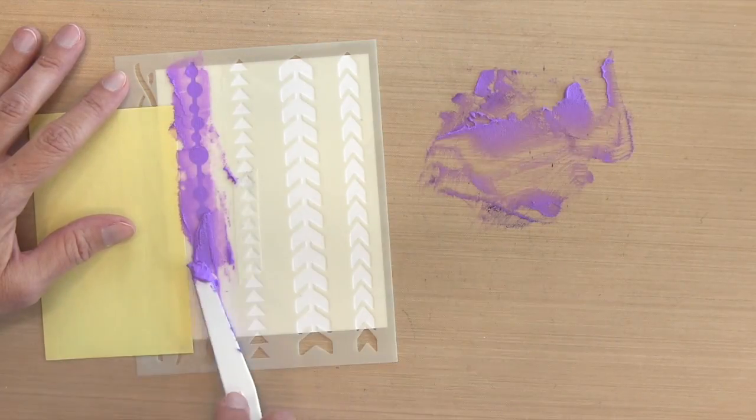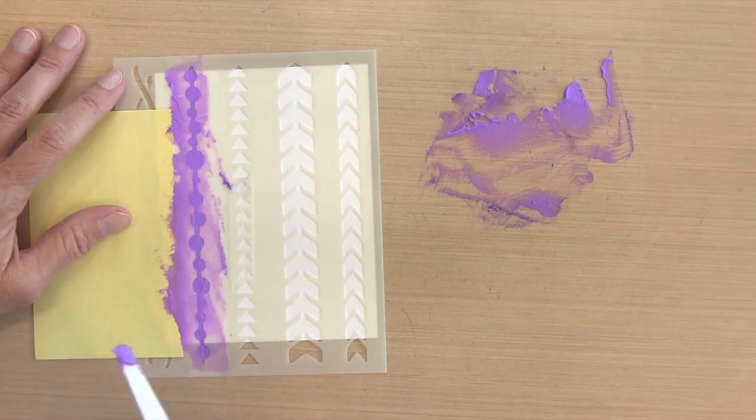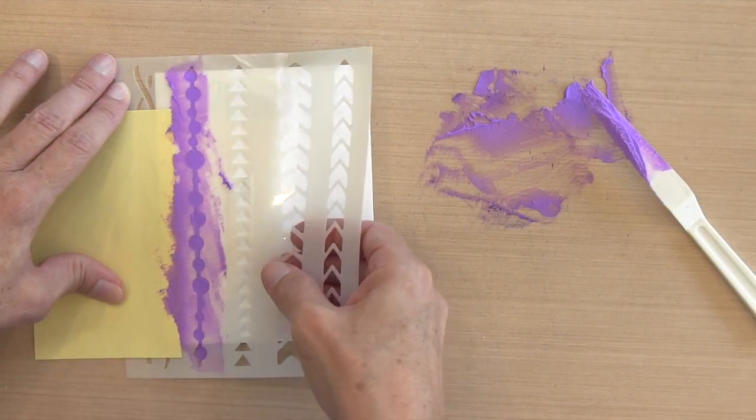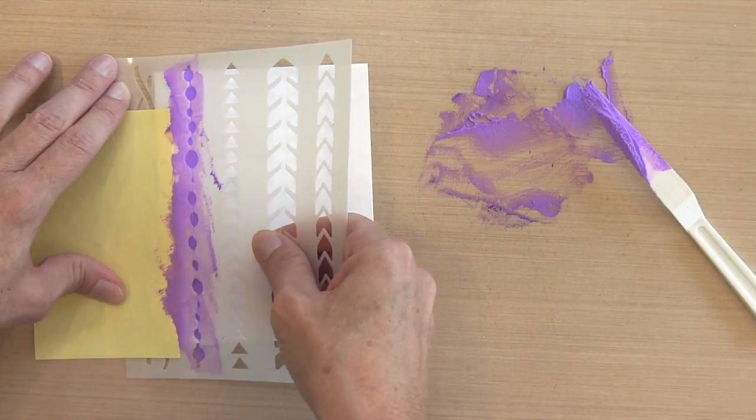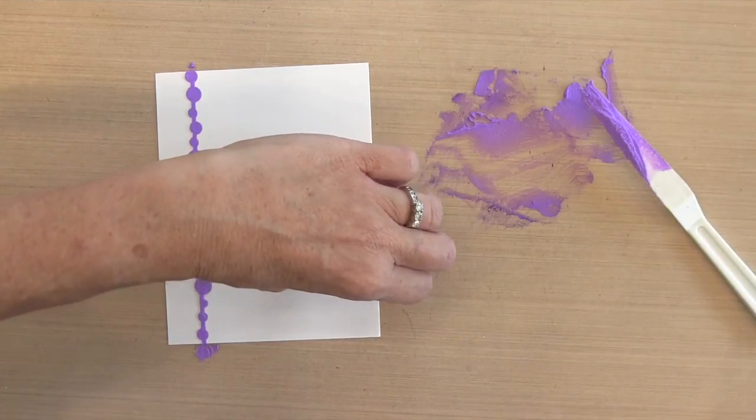I'm just working horizontally, smearing it on there, making sure that I have a really nice even coat over the whole thing. Now I'll pick this up. I just have that surgical tape so I'm going to be really careful not to smear anything. I'm going to let this dry completely before I move on to the next step.